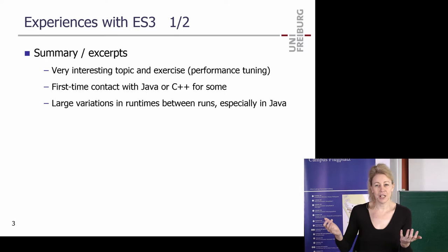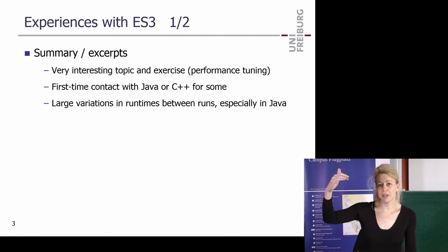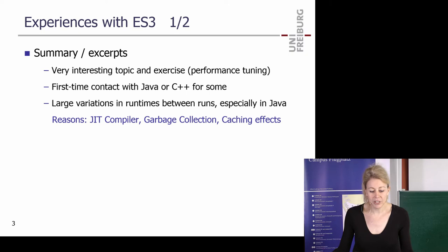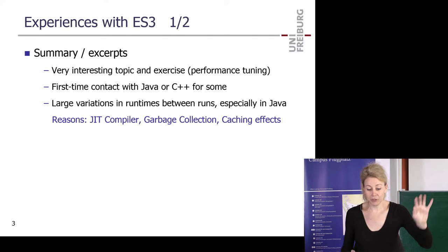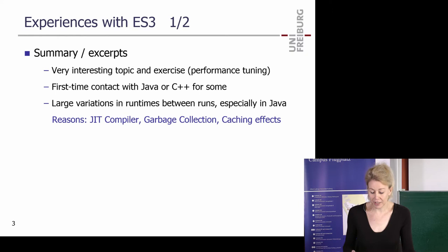One approach is to average over a large number of runs, but probably the best thing to do is ignore the first five runs. Java has a bytecode compiled on the fly with a just-in-time compiler — at some point it decides to compile the code once and for all and run machine code, so it becomes faster. There's also garbage collection which can kick in any time and ruin your runtime, plus caching effects which you also have in C++.